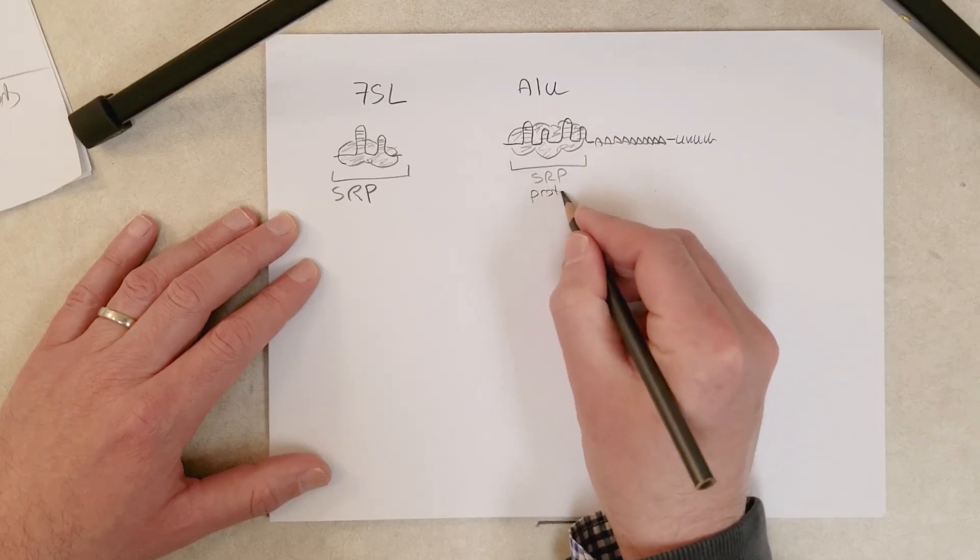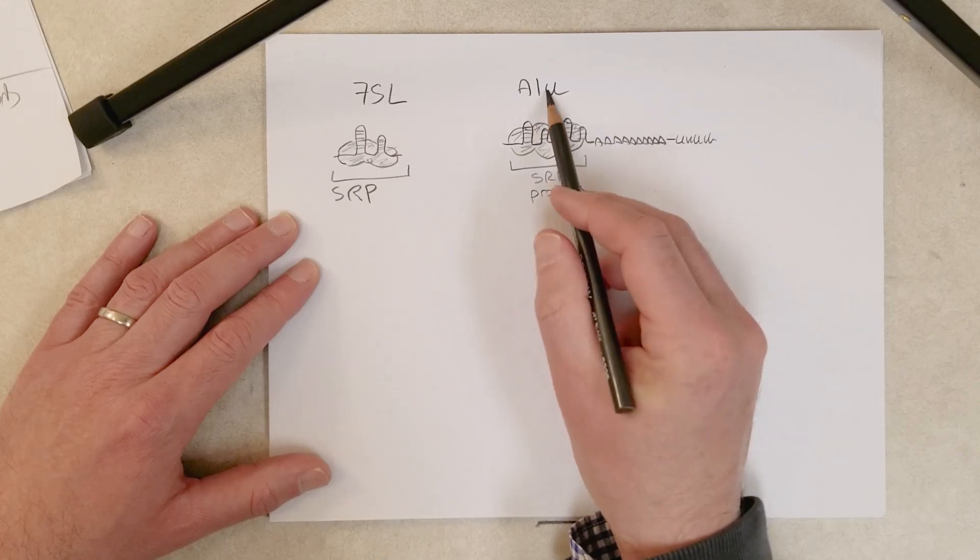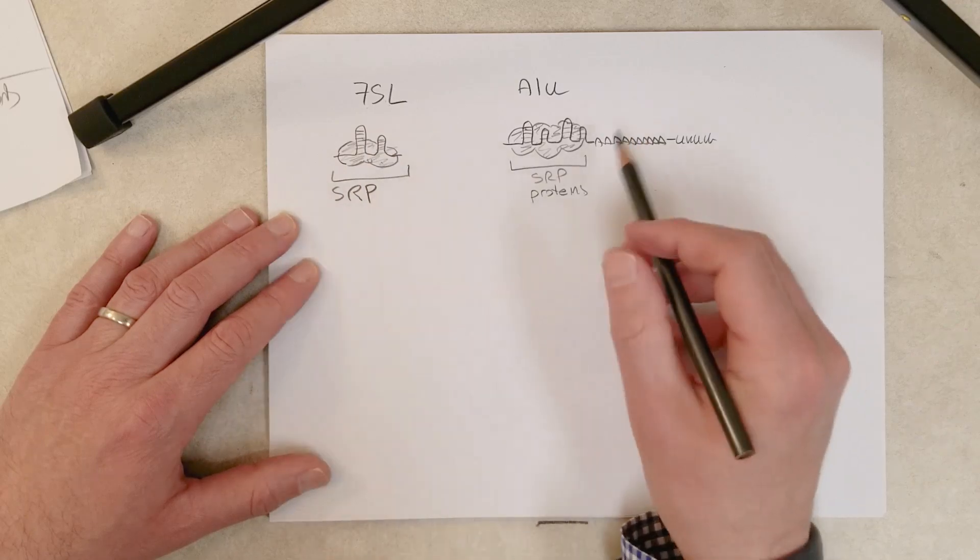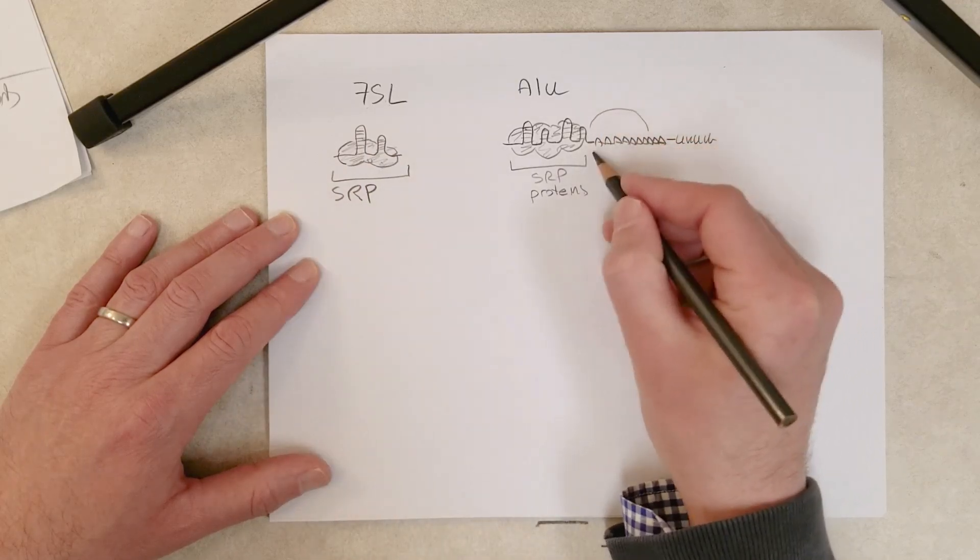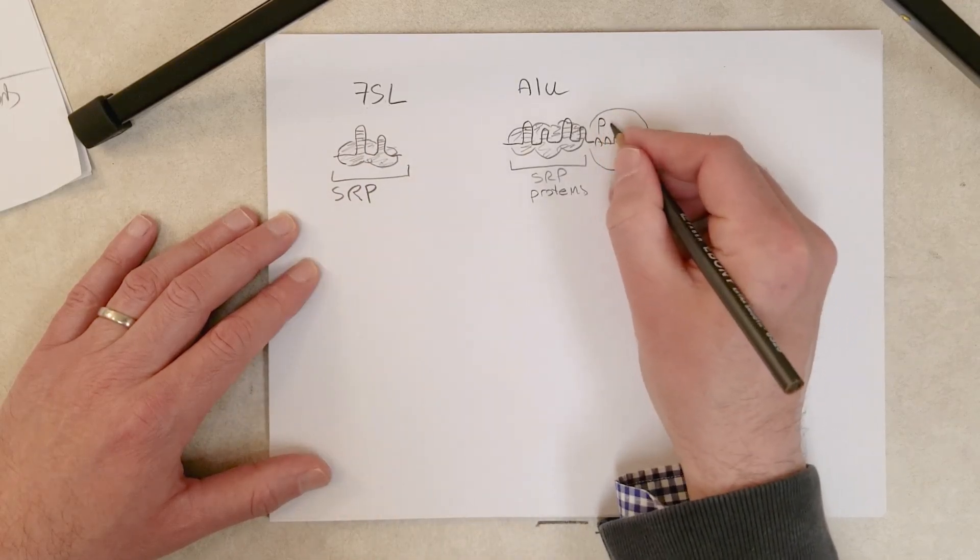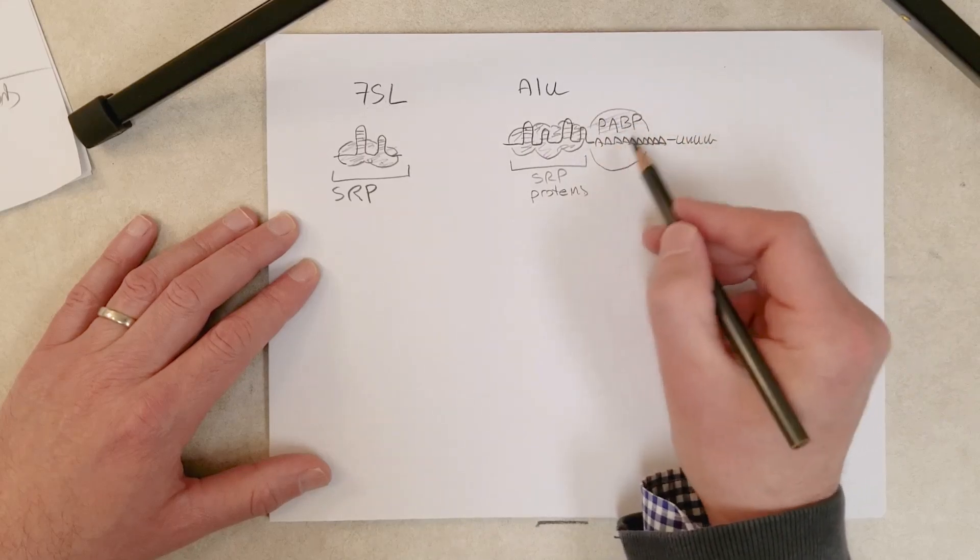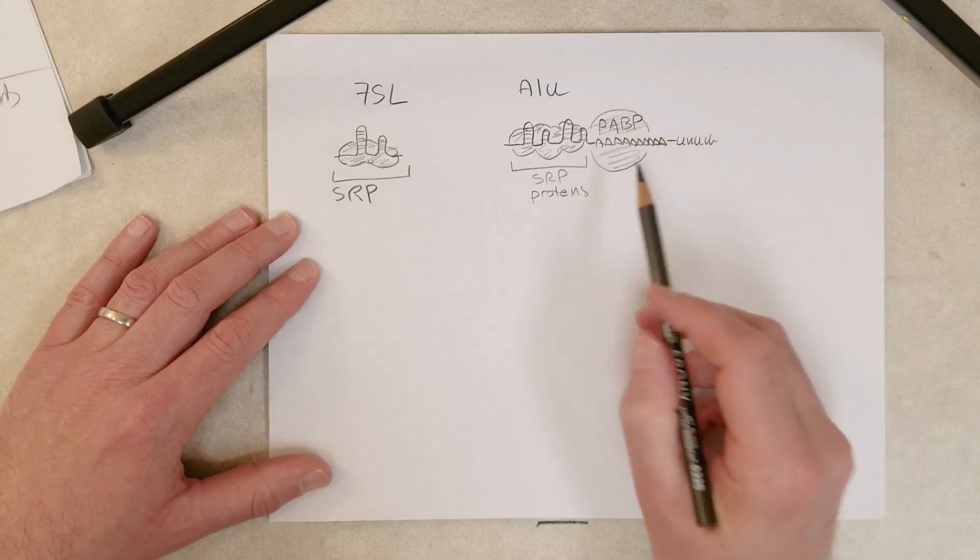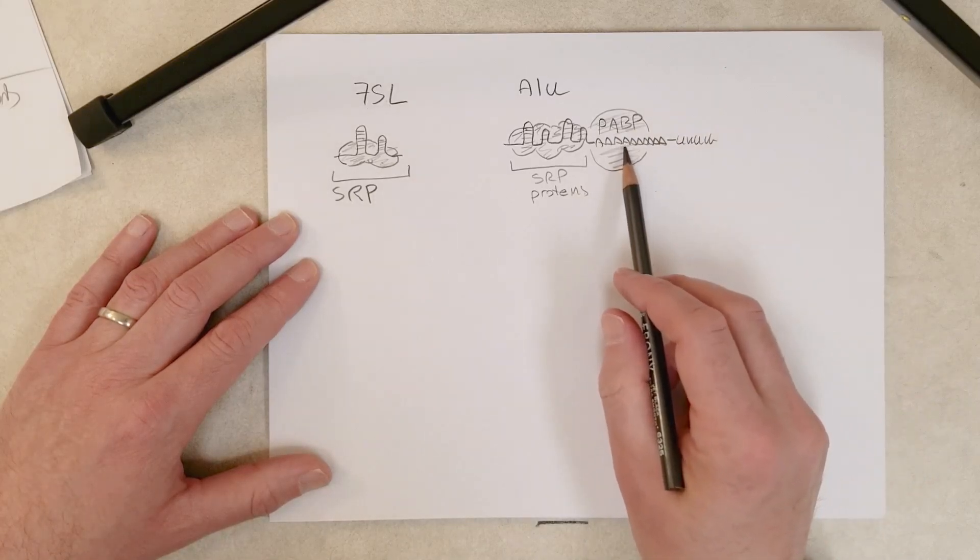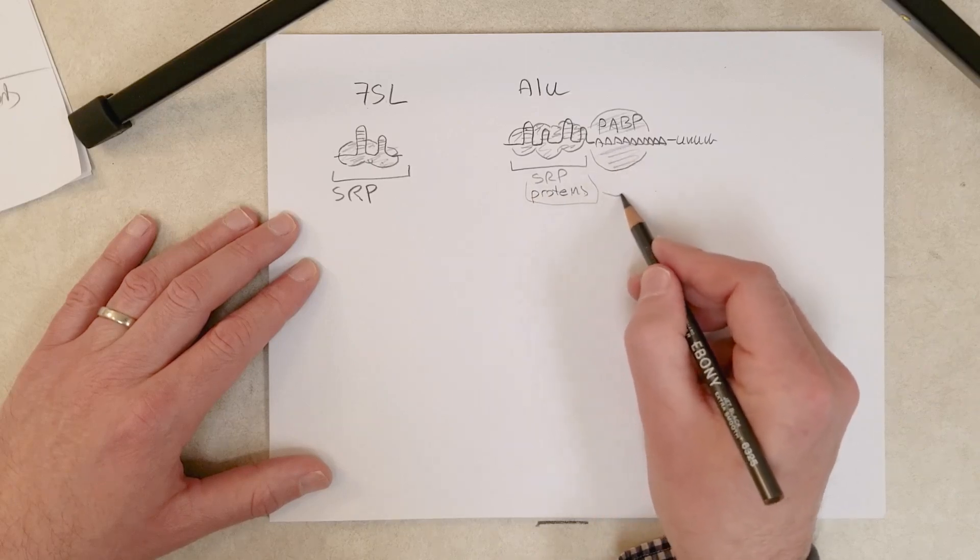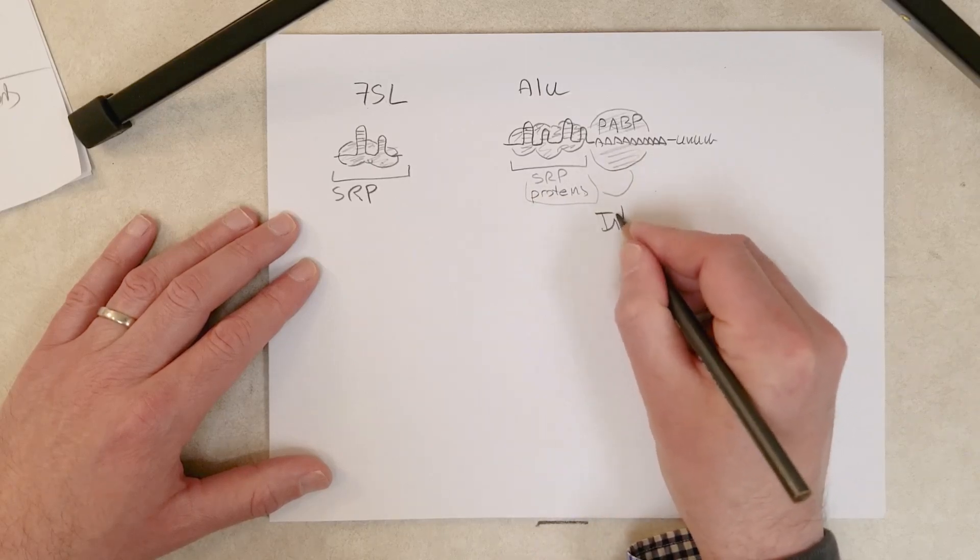We'll get the SRP proteins binding to the ALU RNA. The proteins of the signal recognition particle are still going to bind the ALU RNA because it's very similar to the 7SL RNA. Another protein called poly-A binding protein, which typically binds to poly-A tails, is going to bind to the A-rich region of the RNA. The SRP proteins and the poly-A binding protein both interact with ribosomes.